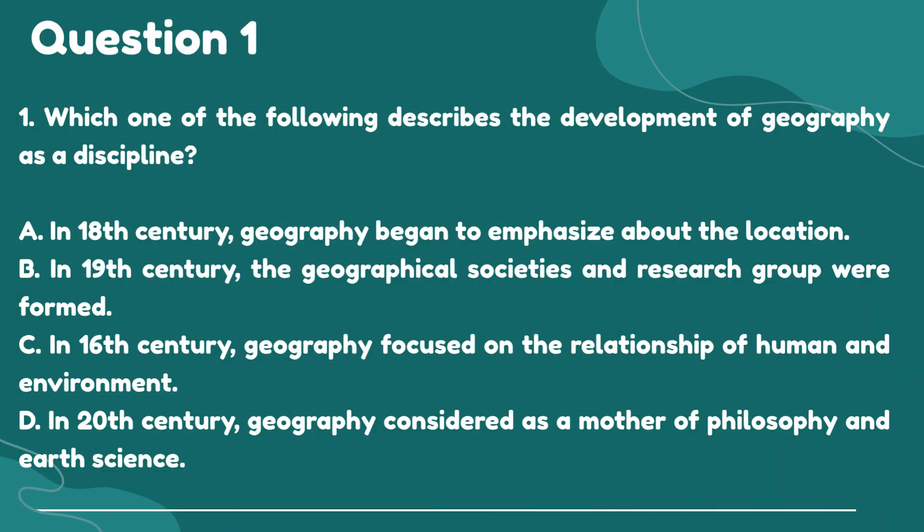Question 1. Which one of the following describes the development of geography as a discipline? A. In the 18th century, geography began to emphasize location. B. In the 19th century, the geographical societies and research groups were formed. C. In the 16th century, geography focused on the relationship of humans and environment. D. In the 20th century, geography was considered as a mother of philosophy and earth science.